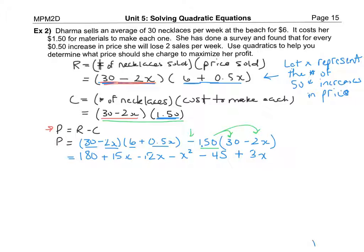All right now we're going to collect like terms and I've got just a negative x squared no other x squares to go with that now I'll look at the x terms I have 15 x's here and minus 12 x's here that's 3 x's plus 3 more x's that will equal plus 6 x's and then we have 180 take away 45 so 180 take away 40 would be 140 take another 5 off of that that should be plus 135.